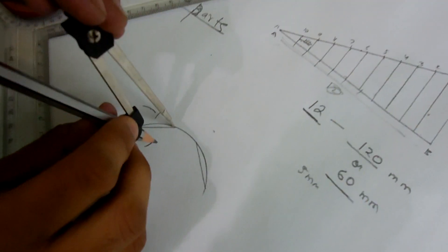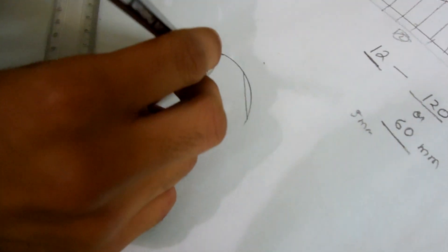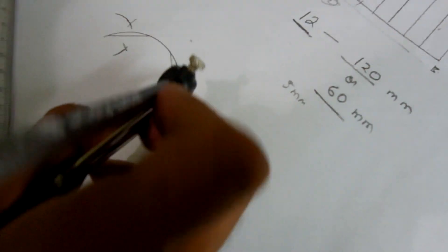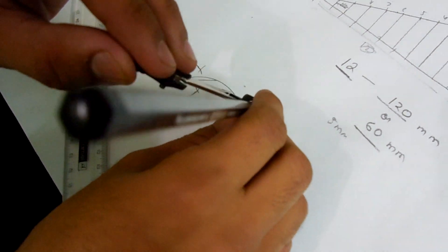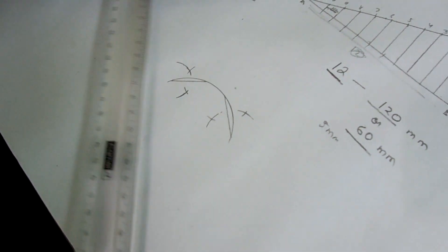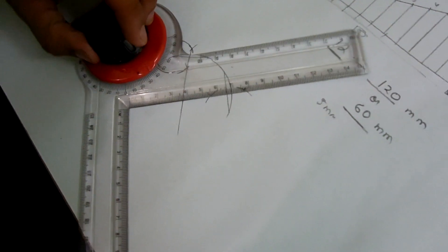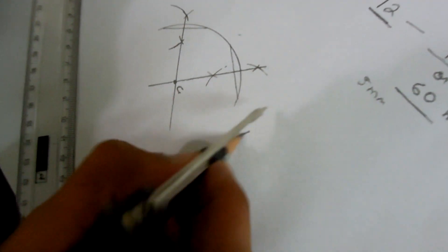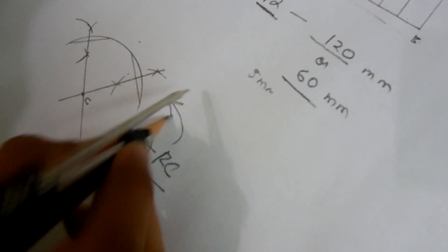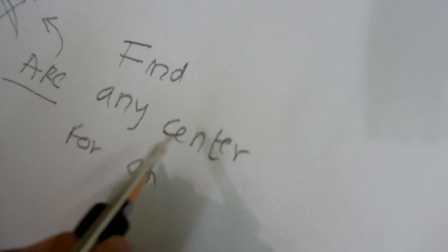Bisecting this line. This one, and this is the center for the given arc. By this help you can find any center for any curve.